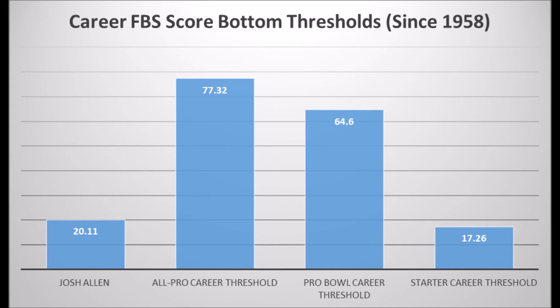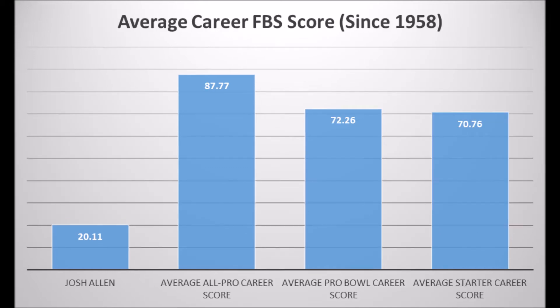When you look at the average all-pro score, the average Pro Bowl score, and the average starter score in terms of career score, Josh Allen is just woefully below average in all these areas, proving the point again that he would have to become an outlier in order to become a successful NFL quarterback based on the data. He wouldn't even really have a chance of sniffing all-pro or Pro Bowl potential based on his overall data.